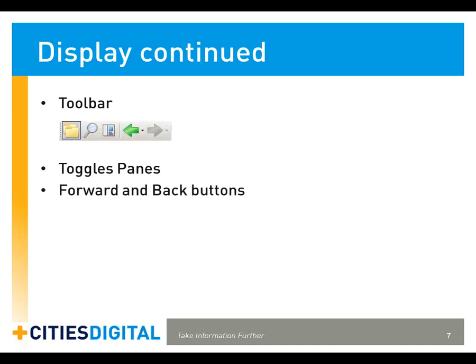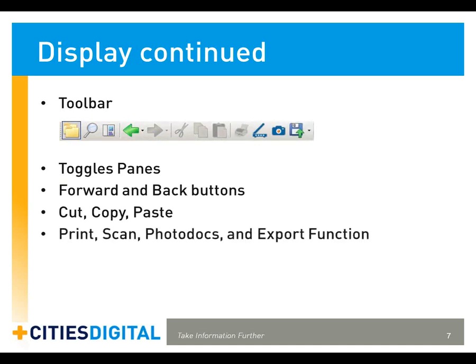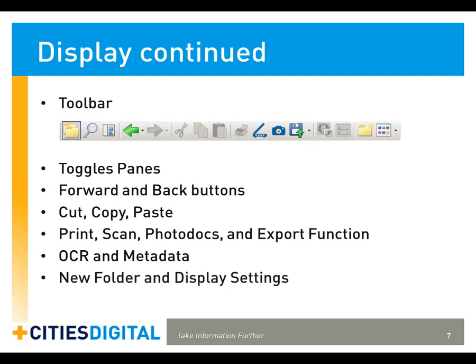Next are your forward and back buttons. Following that, you'll recognize the standard cut, copy, and paste functions, which work exactly as they do in Windows. Then there are your Print, Scan, Photo Docs, and Export buttons. The OCR and Metadata buttons allow you to generate OCR text and edit metadata for a document without actually opening it. The New Folder button creates a new folder in the Contents pane, and the View Styles button allows you to change how your icons are displayed.